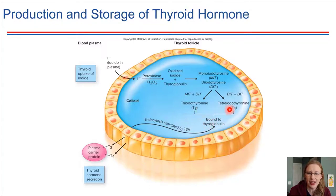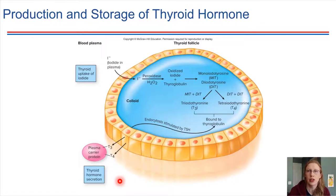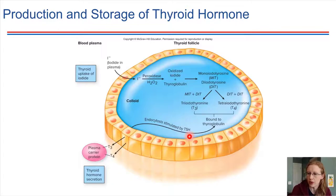T3 and T4 will be endocytosed by these cells and then ultimately transported out into the blood plasma. Usually they get attached to a carrier protein, and from there they travel through the bloodstream to all of their target cells throughout the body. That is what's going on inside a follicle — the colloid space is where these hormones are being produced.